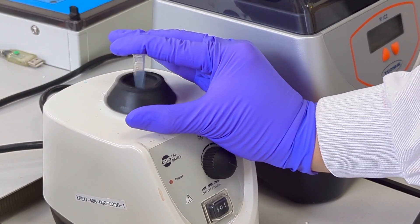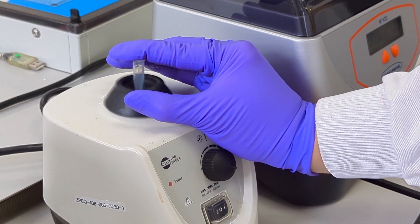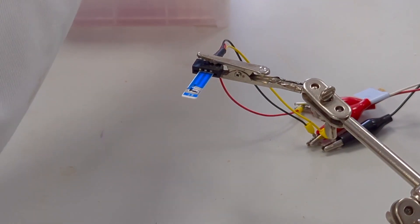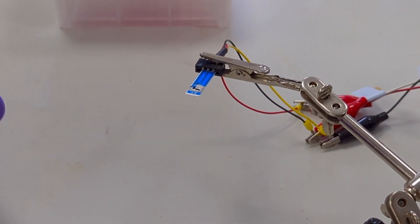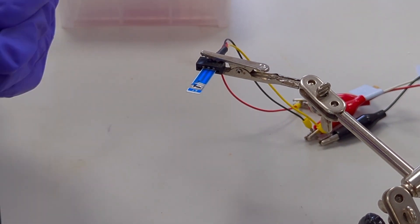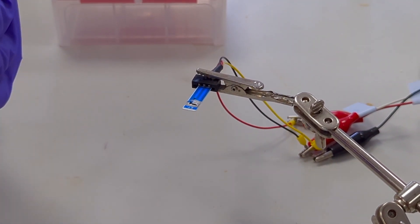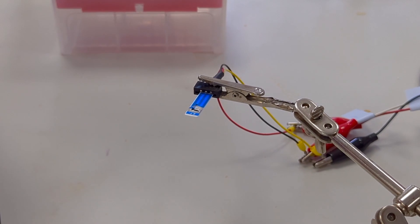Similar to last time, we vortex it to homogenize the solution, and we carefully wick off all the buffer on the sensor surface.